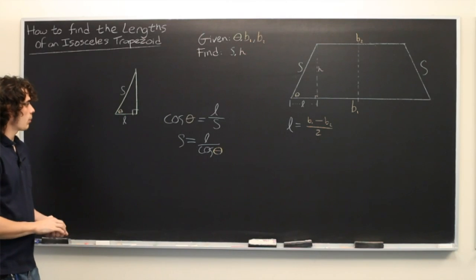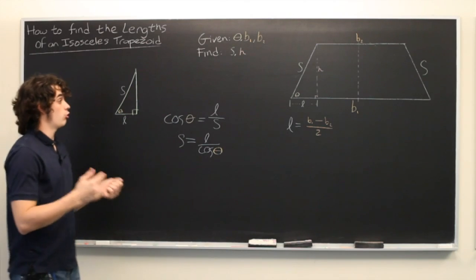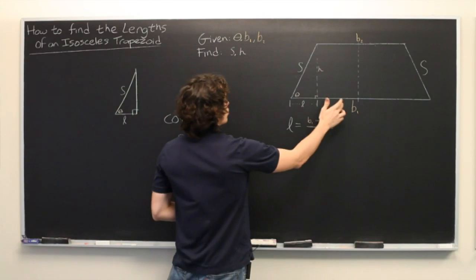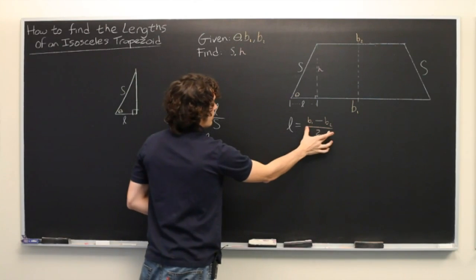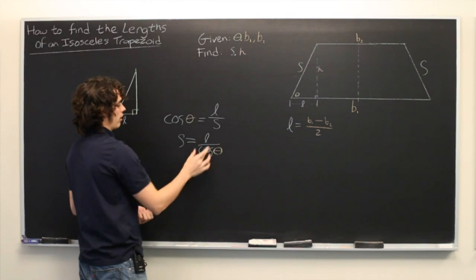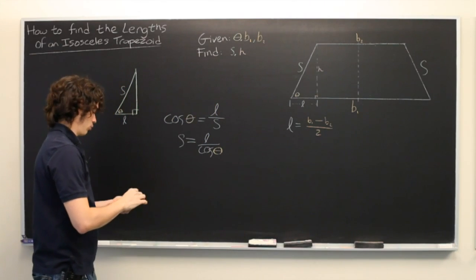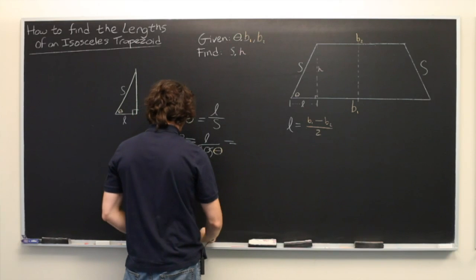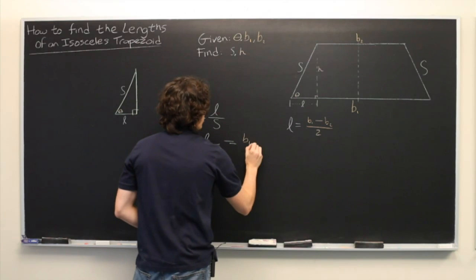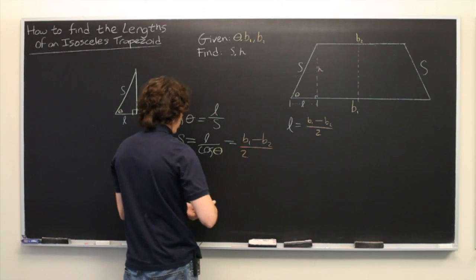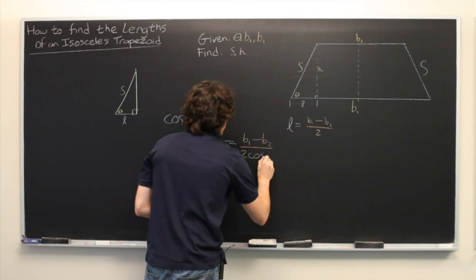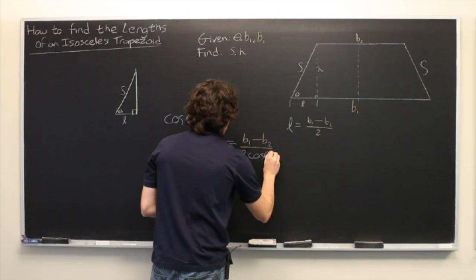And from here, if you want to solve extremely explicitly in terms of just the quantities that we started with, you can simply take this value for L and plug it in here, which would give you B1 minus B2 over 2 times cosine theta.